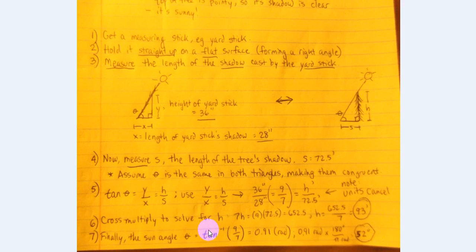Now tan to the minus 1, just a brief note here, is not the same thing as 1 over tangent. 1 over the tangent is actually the cotangent, which would be the reciprocal of this, or 7 ninths. That's not what we're after here, we're trying to solve for the angle.